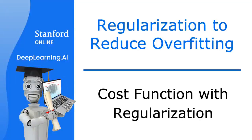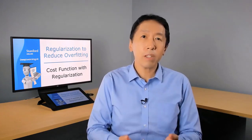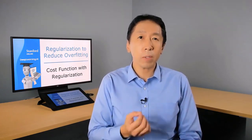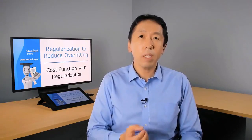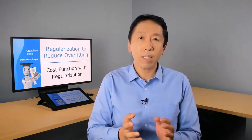In the last video, we saw that regularization tries to make the parameter values w1 through wn small to reduce overfitting. In this video, we'll build on that intuition and develop a modified cost function for your learning algorithm that you can use to actually apply regularization.